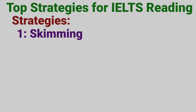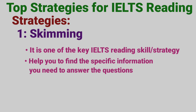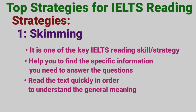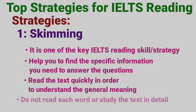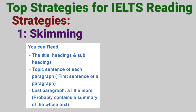First, about skimming. Skimming is one of the key IELTS reading skills. It will help you to find the specific information you need to answer the questions. Skimming means reading the text quickly in order to understand the general meaning. You do not read each word or study the text in detail. In this strategy, you can read the title, headings and subheadings. Also read the topic sentence — the first sentence — of each paragraph. Also read the last paragraph a little more, as it probably contains a summary of the whole text. There are different ways of skimming, which we can discuss in detail in an upcoming video.